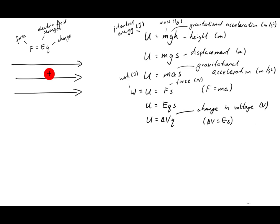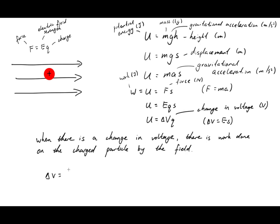Which tells us that when there is a change in voltage, there is work done on the charged particle by the field. This equation is often written in the form delta v equals u on q.